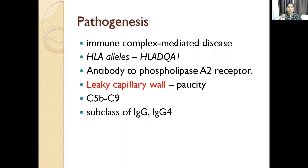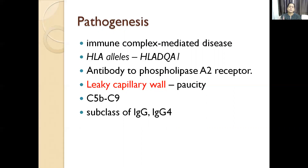In any glomerular pathology, there is an antigen — either fixed, planted, or circulating — which has an antibody reaction. Once the immune complex is formed, something is trying to destroy it. Even that destruction — which is trying to protect — is also causing the glomerular pathology. So in that way there is a leaky capillary wall.